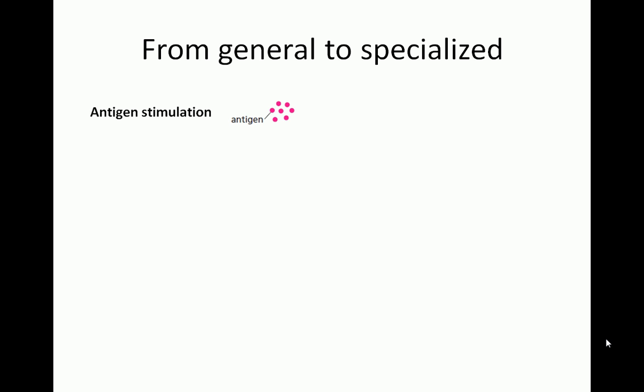We will now review how lymphocytes come to produce highly specialized antibodies. Antigen stimulation is when an immune response invoking molecule, called an antigen, binds to surface receptors on a lymphocyte in order to activate it. If the activated lymphocyte is a B cell, it will go on to produce antibodies. If it is a T cell, it will kill infected cells, activate other immune cells, or inhibit other immune cells, depending on its type.